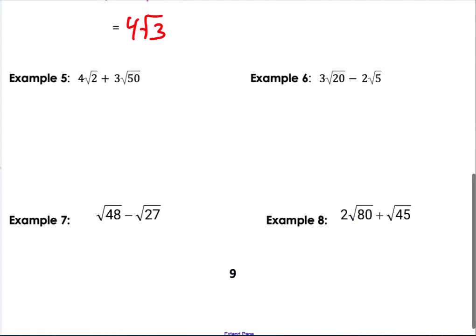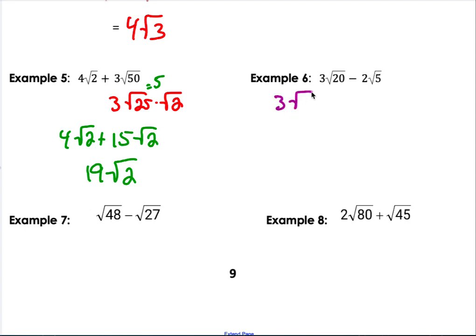Here I'm going to break my 50 into square root of 25 times the square root of 2. Well, that's really 5. So 3 times 5 is 15 square roots of 2, and my 4 square roots of 2 give me 19 square roots of 2.